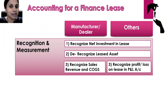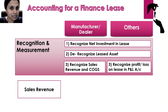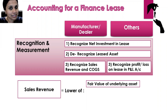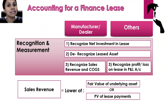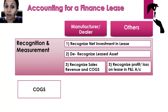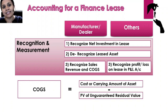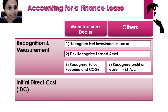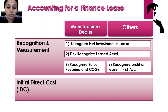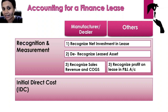The next concept is sales and cost of goods sold for a manufacturer dealer lessor. The sales revenue is the lower of the fair value of the underlying asset or the present value of the lease payments receivable — please note this does not include the unguaranteed residual value. The cost of goods sold is calculated as the carrying amount of the asset less the present value of the unguaranteed residual value. Regarding initial direct costs — we already covered this in lessee accounting. Initial direct costs are expenses incurred to bring about the lease. When incurred by the lessee, we added them to the right-of-use asset account.